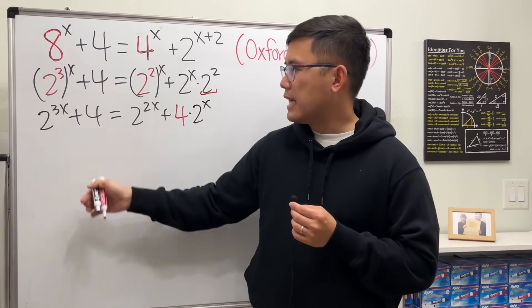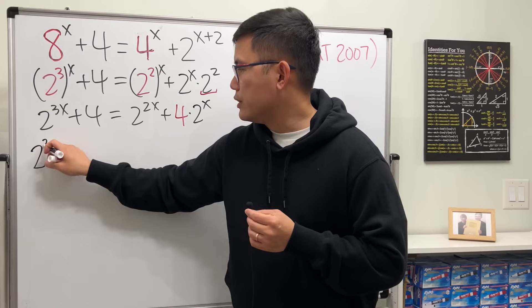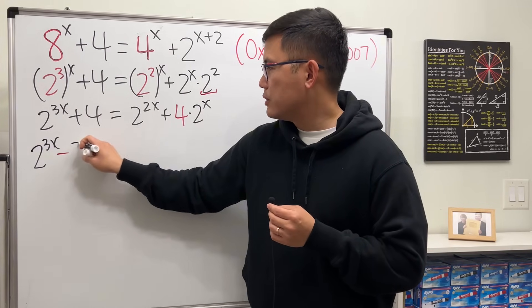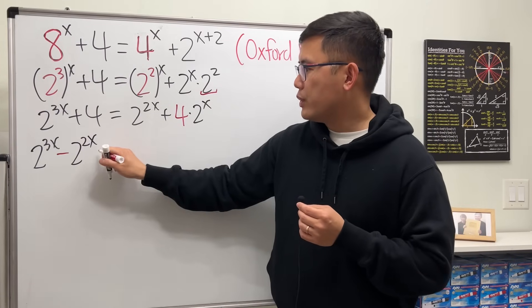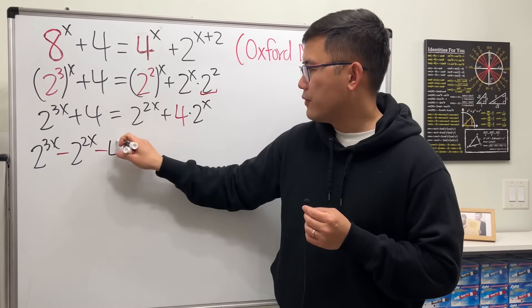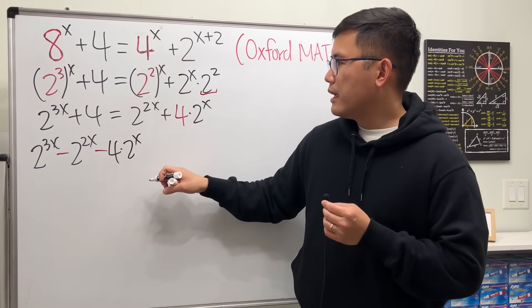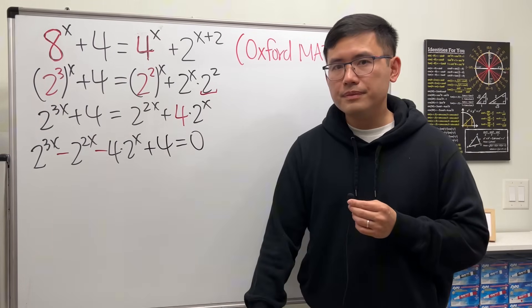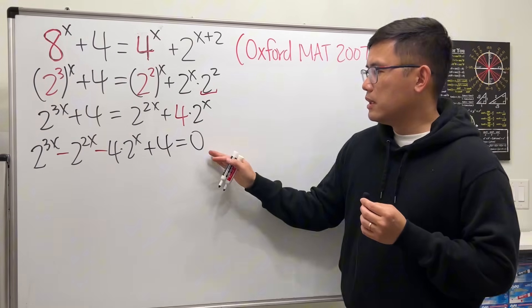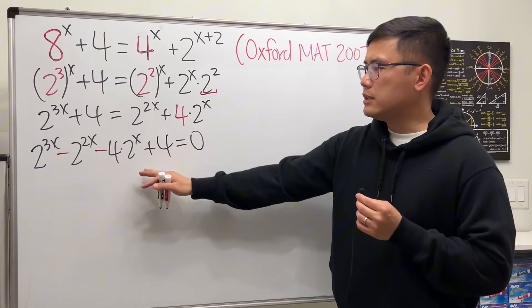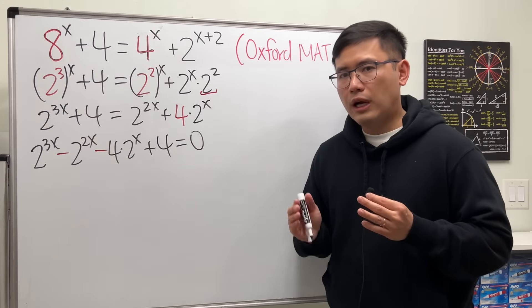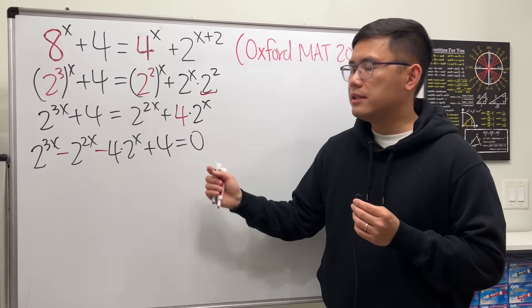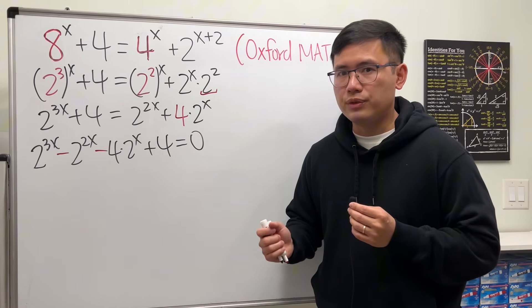Let me move these two terms to the other side. We get 2 to the 3x minus 2 to the 2x minus 4 times 2 to the x plus 4, and that is equal to 0. We did this because we want to have one side equal to 0, and as you can see, it looks like we still have an exponential equation, but the truth is we can look at this as a cubic equation in terms of 2 to the x.